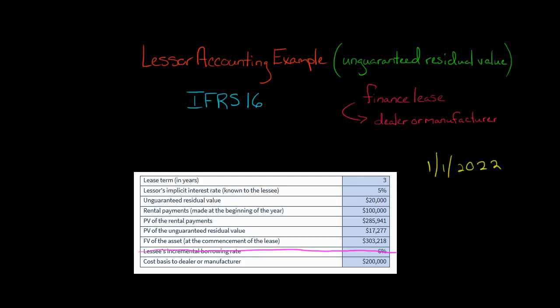The lessee is going to make rental payments at the beginning of each year of $100,000. So the present value of those rental payments is going to be $285,941. The present value of the unguaranteed residual value is $17,277. If you add these two together, you get the fair value of the asset at the commencement of the lease: $303,218. So that's going to be our initial lease receivable.